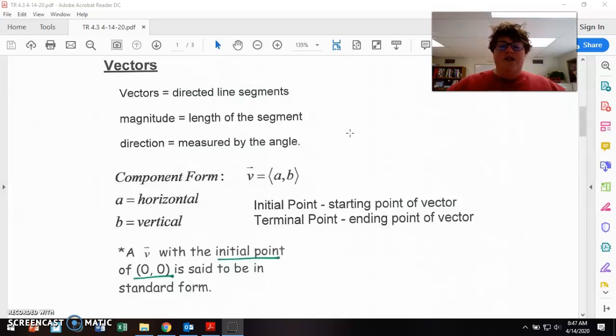Your initial point of your vector is your starting point. And for what we're going to do, our starting point is always going to be zero, zero. And then the terminal point is the ending point of the vector. So it's not just plotting the point, it's plotting a directed line segment. So a vector with an initial point, that starting point of zero, zero, which is what we're going to do is said to be in standard form. So we're going to graph vectors in standard form.